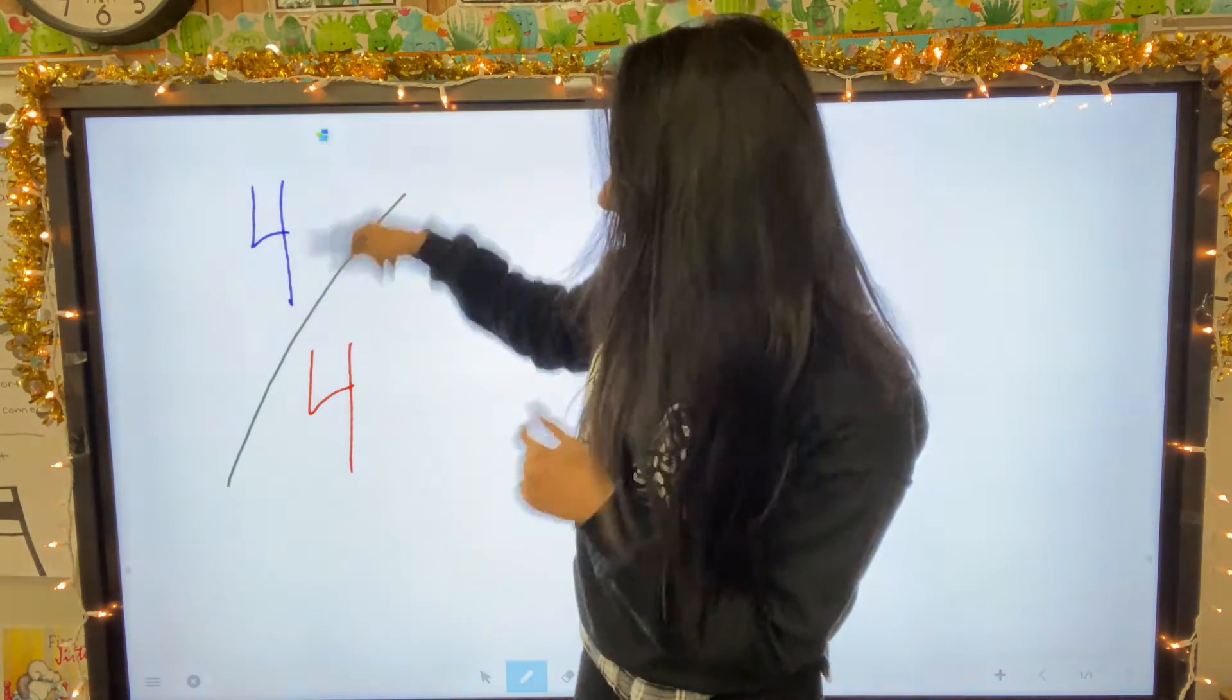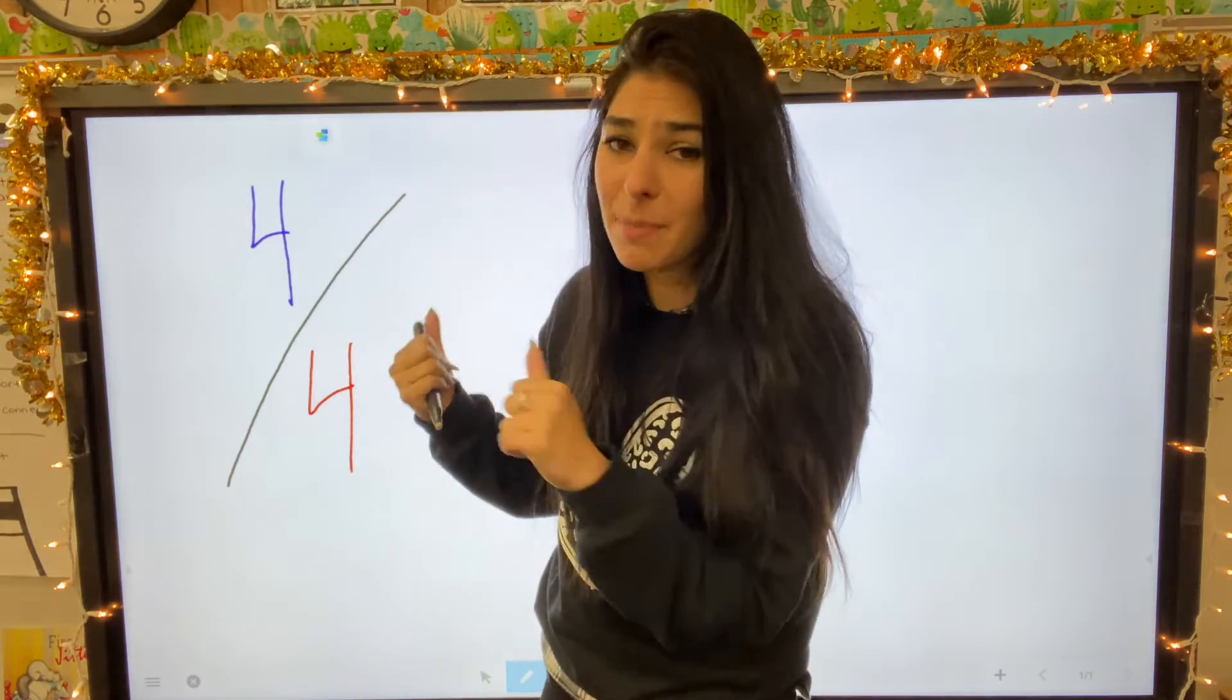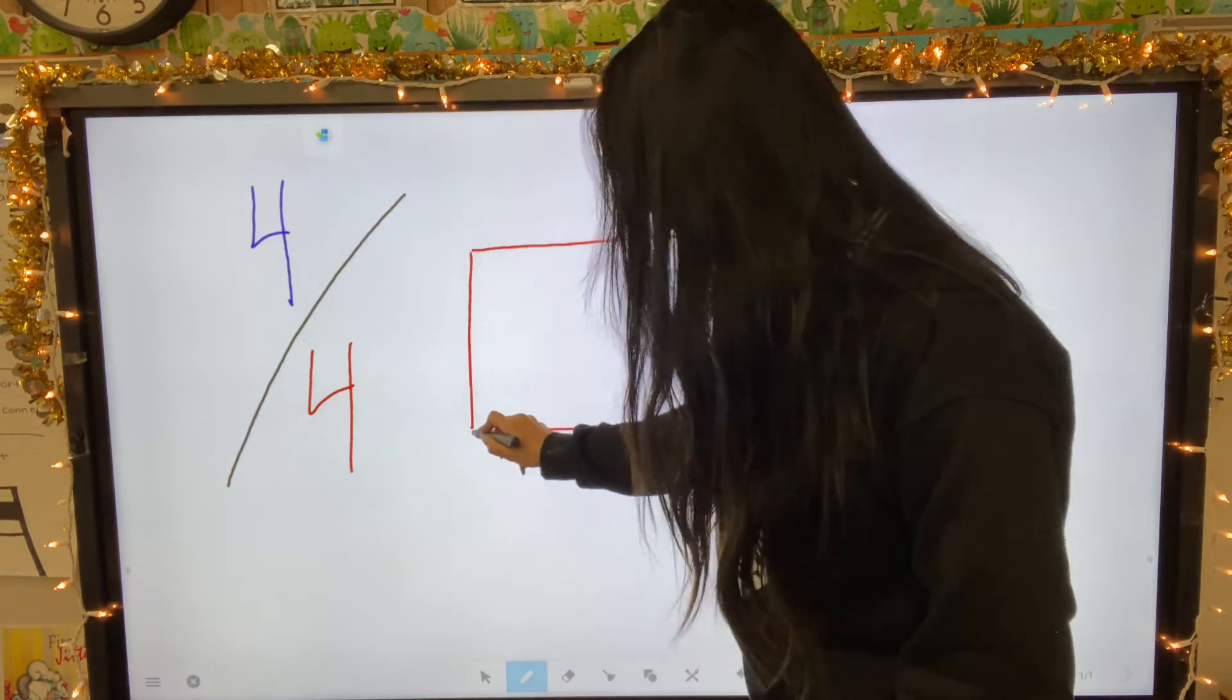So again, the denominator is the number that's down. That's the object and how many pieces it's cut into. So I did a circle last time. This time I'm going to do a rectangle.